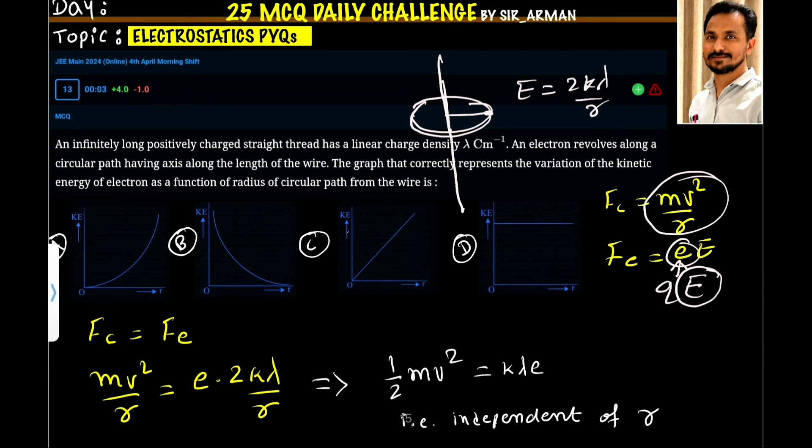But it has some kinetic energy. The kinetic energy is not zero. So the kinetic energy is constant, it does not change. Hence, the graph number d is the correct option. In all these cases, it changes with the r. But here it remains constant with r. So here the kinetic energy is independent. Hence, option d is correct.